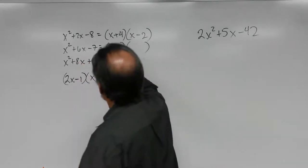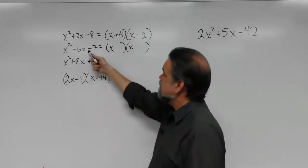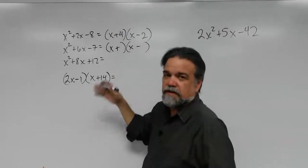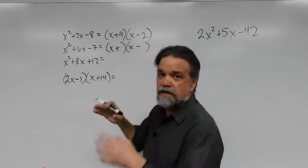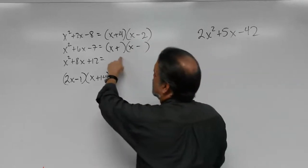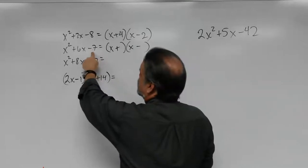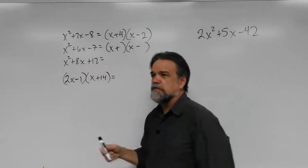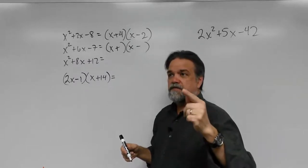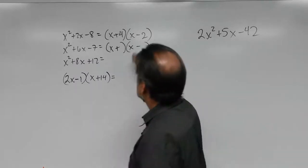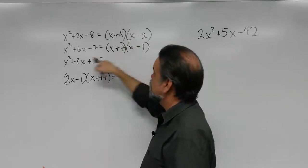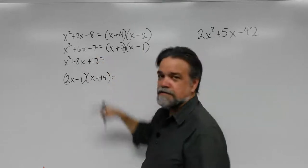Again, x squared, so I'm going to put an x here and an x here. Again, negative product means one positive, one negative. I need a product of negative 7 and a sum of positive 6. That would be 7 times negative 1, because 7 plus negative 1 is 6, and 7 times negative 1 is negative 7.